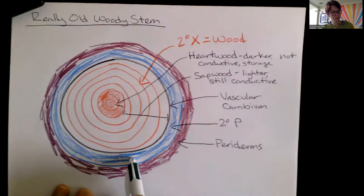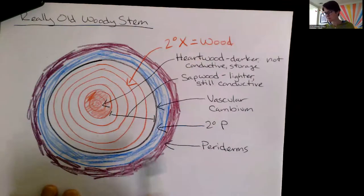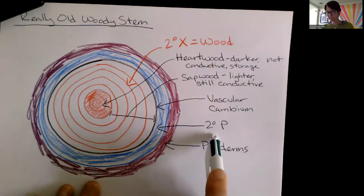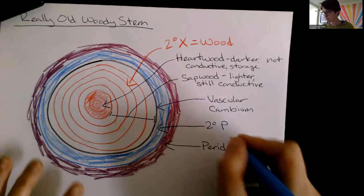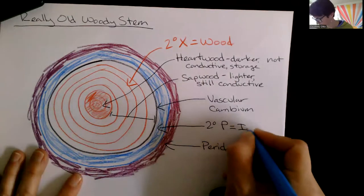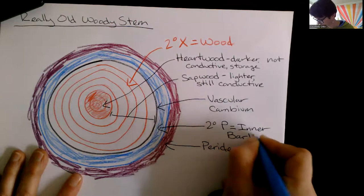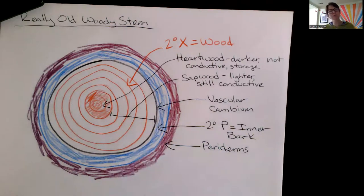So I just want to give you a couple of synonyms here for our secondary phloem and our periderms. Secondary phloem is synonymous with this term inner bark. All right, it's the portion of the bark that's closer towards the inside, right? It's our secondary phloem.